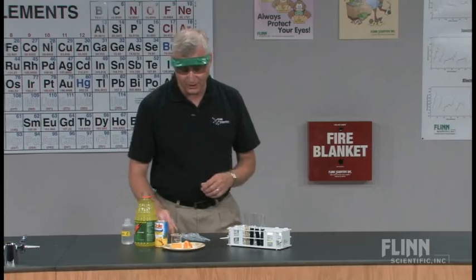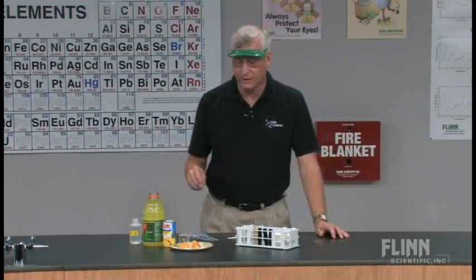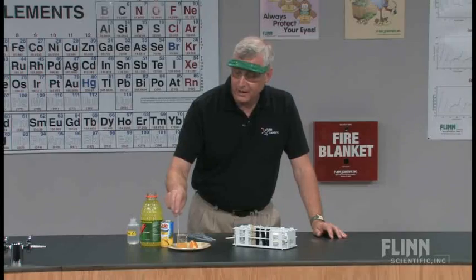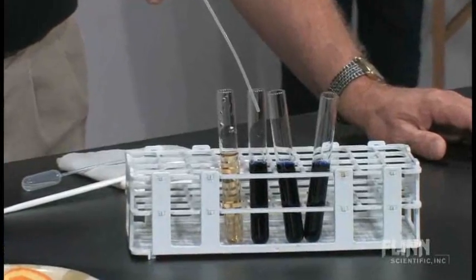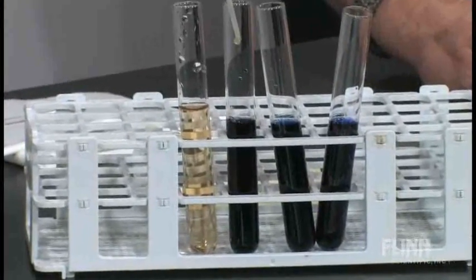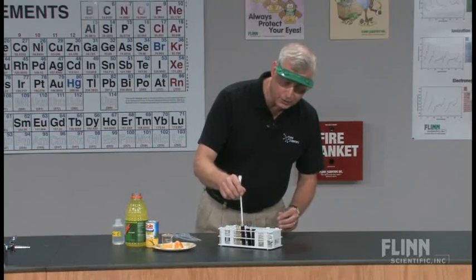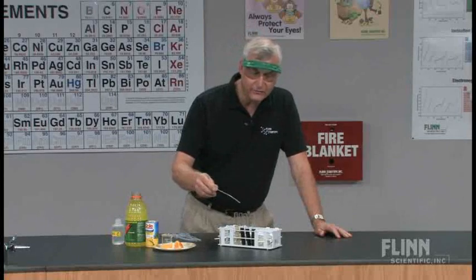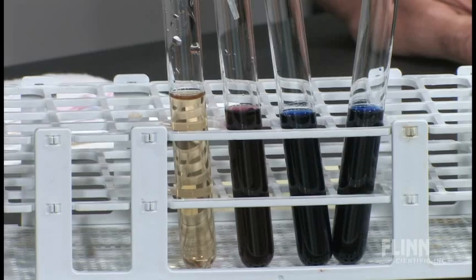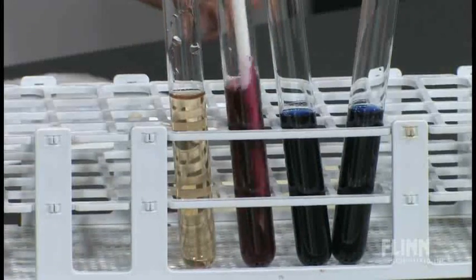Now what we're going to do is use some various juices and compare their Vitamin C content to the standard Vitamin C that we've prepared. We'll start off by taking a look at some hand-squeezed fresh orange juice — that should be very healthy for us. We'll start putting the orange juice in. You would want to understand that it's easiest to use juices that have a fairly light color to them. Tomato juice is difficult to use because it obscures the color change, so I'm using things that are relatively clear in color.